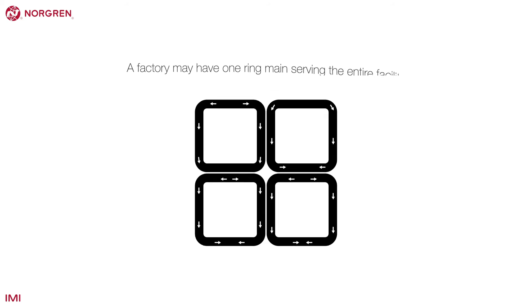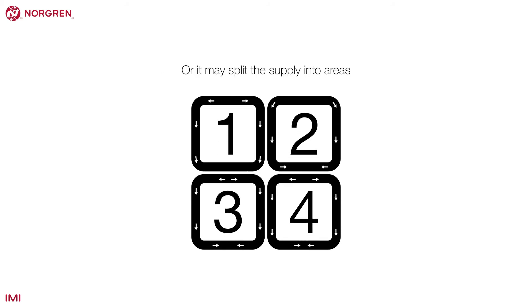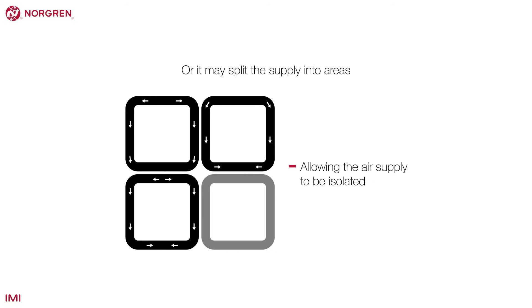A factory may have one ring main serving the entire facility or it may split the supply into areas or zones. Each zone would have its own ring main, allowing the air supply to be isolated when not needed.